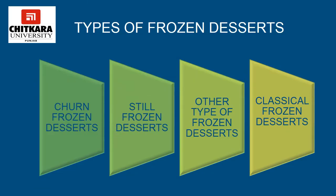The types of frozen desserts include churn frozen desserts, still frozen desserts, other types of frozen desserts, and the classical frozen desserts. The various kinds of frozen desserts are mainly classified on the basis of methods employed for preparing them. The two most commonly adopted methods are churn freeze and still freeze.